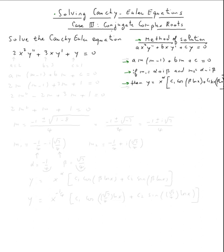Alright, so let's solve this equation: 2x²y″ + 3xy′ + y = 0. The characteristic equation is am(m-1) + bm + c = 0. Remember, my a is two, my b is three, and my c is one.